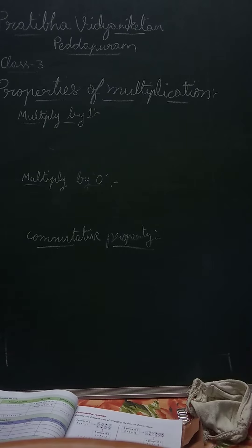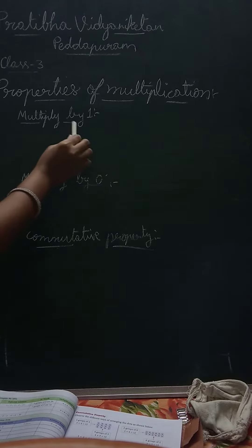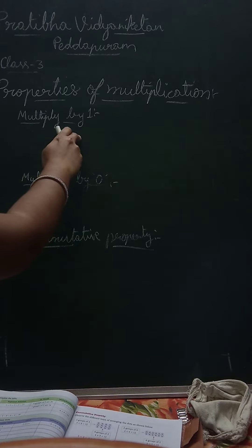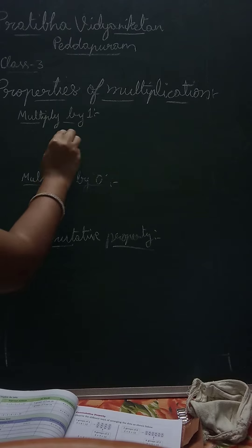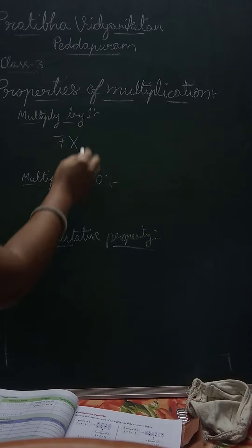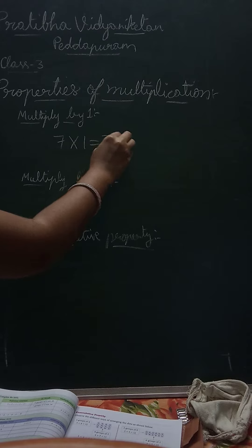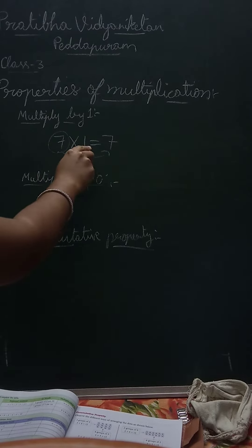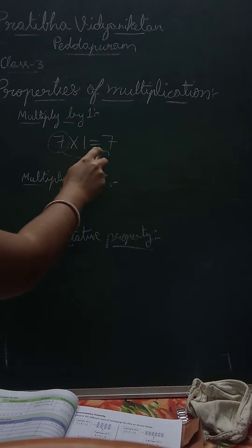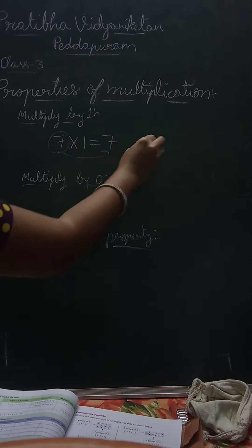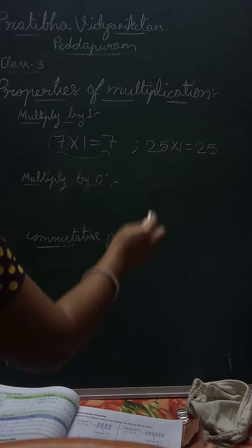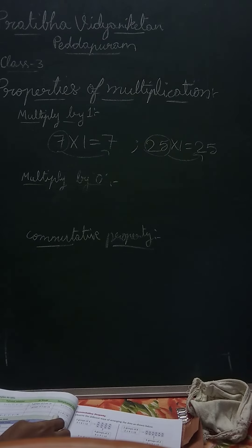Okay students, the next topic is properties of multiplication. The first property is multiply by 1. Suppose we take any number, we take 7 multiply with 1, we get the same number. That means we can multiply any number with 1 and the answer is the same number itself. Suppose we take 25 multiply with 1, we get 25 only — the same number.